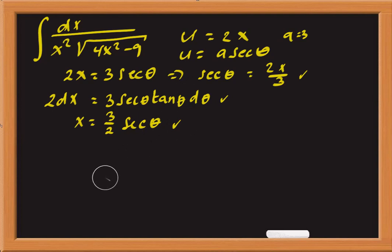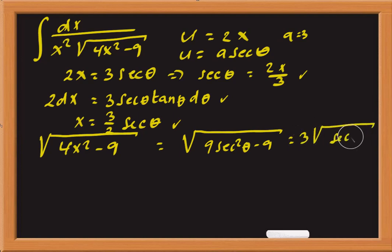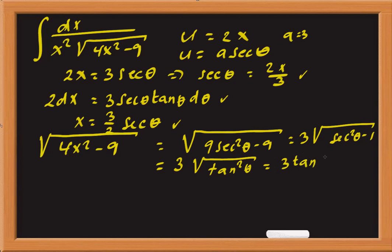Now we calculate the value of the square root of 4x squared minus 9 in terms of theta. That gives 9 secant squared theta minus 9. Pulling out the 9, we get 3 times the square root of secant squared theta minus 1, which equals 3 times the square root of tangent squared theta, landing us with 3 tangent theta.